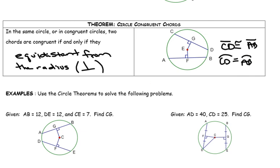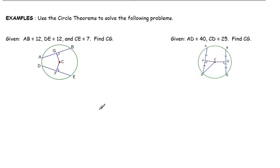So in the first example, here we have equidistant chords. It says that AB is 12, DE is also 12, and CE is 7. CE would be a radius because C is the middle and E is an end point. And the definition of a radius is that it starts from the middle to the end point of a circle. So CE is 7.